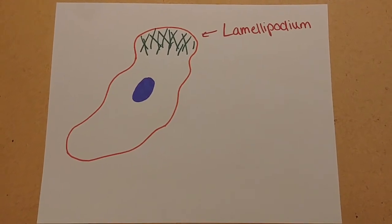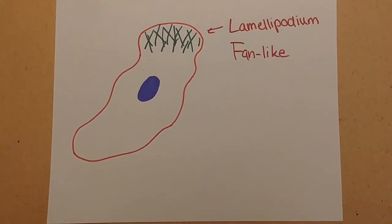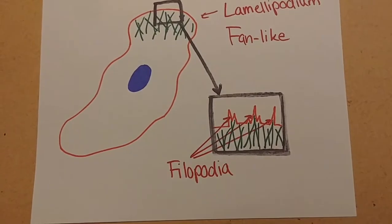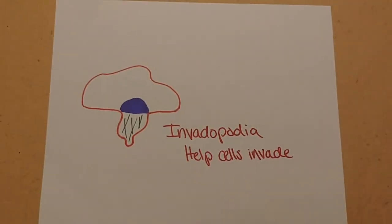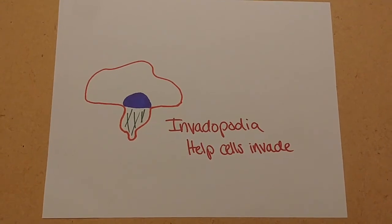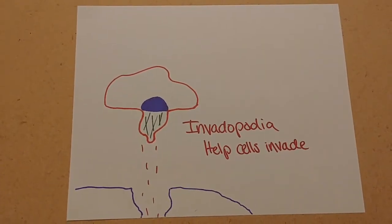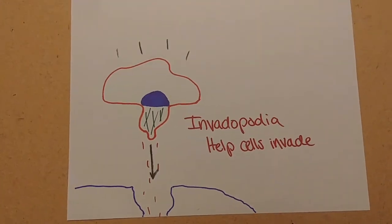Lamellipodia are fan-like structures that help the cell move. Filopodia are spiky structures that allow the cancer cell to sense the surrounding environment and mediate cell-to-cell interactions, and invadopodia are subnuclear protrusions that release proteases that allow the cell to invade successfully by degrading the extracellular matrix.